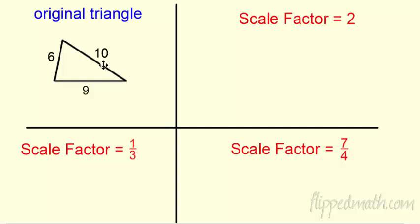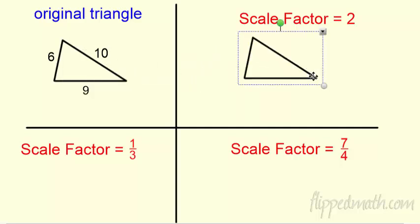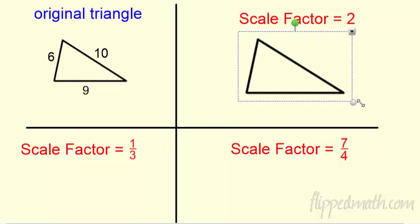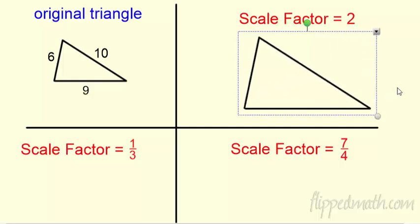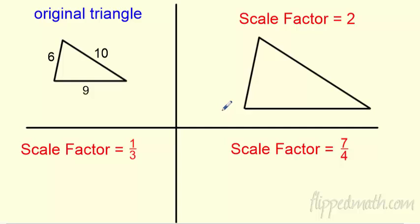Here's my original triangle — sides of six, nine, and ten. Before, I was giving you two triangles and you'd find the scale factor. Now I'm just going to give you the scale factor. Let's say I want to make this twice as big. We could make a proportion out of this — it's all proportional. If I'm scale factoring by two, what does six turn into? It turns into twelve.